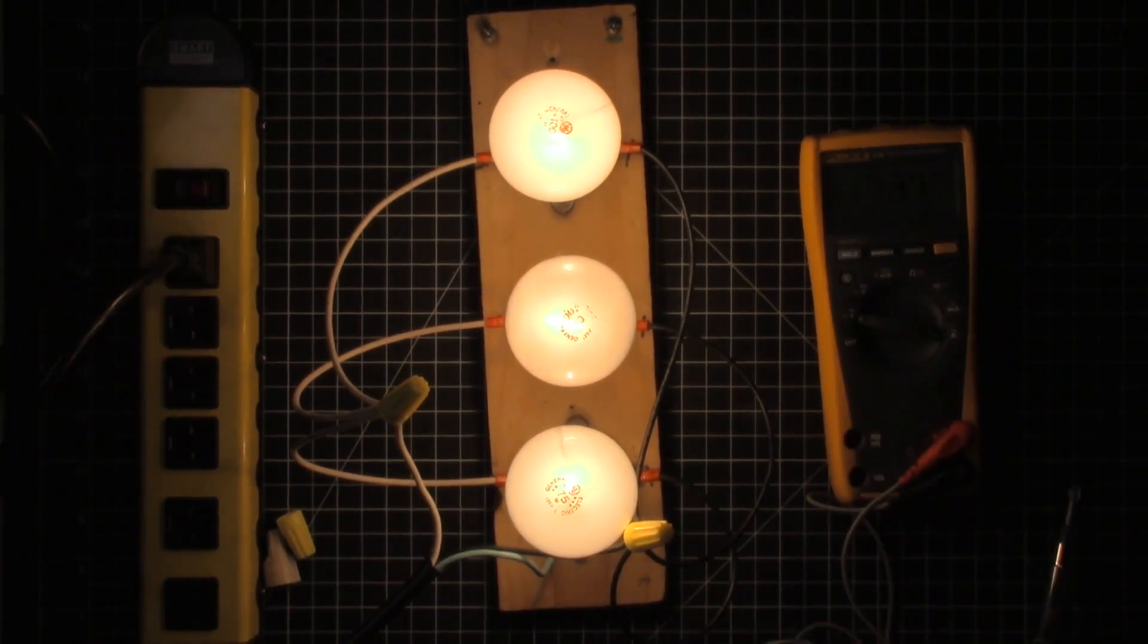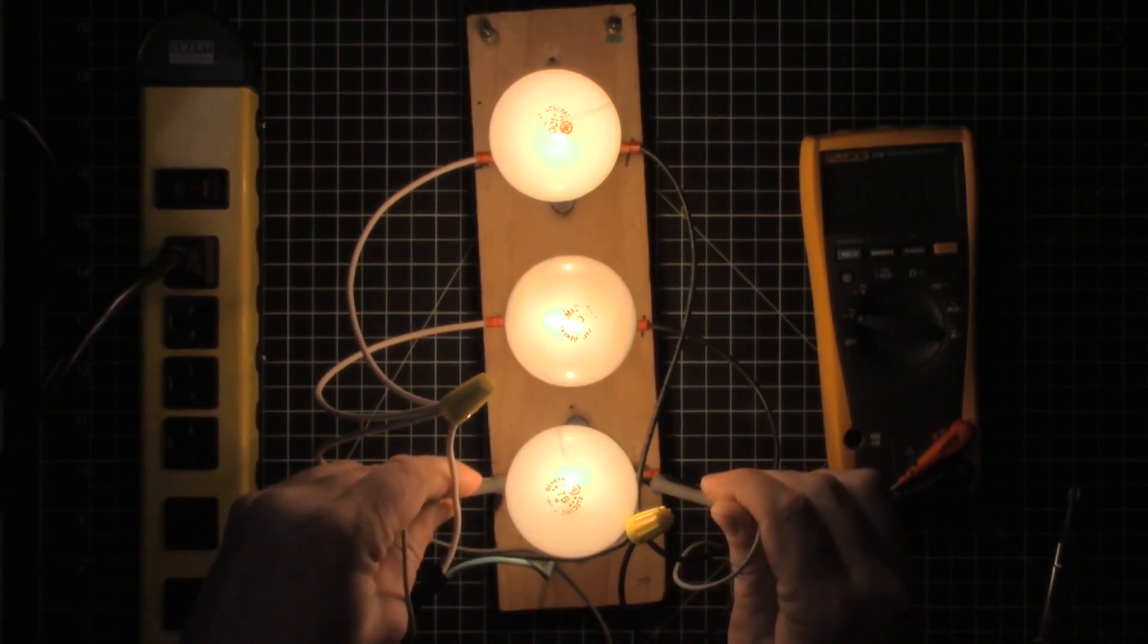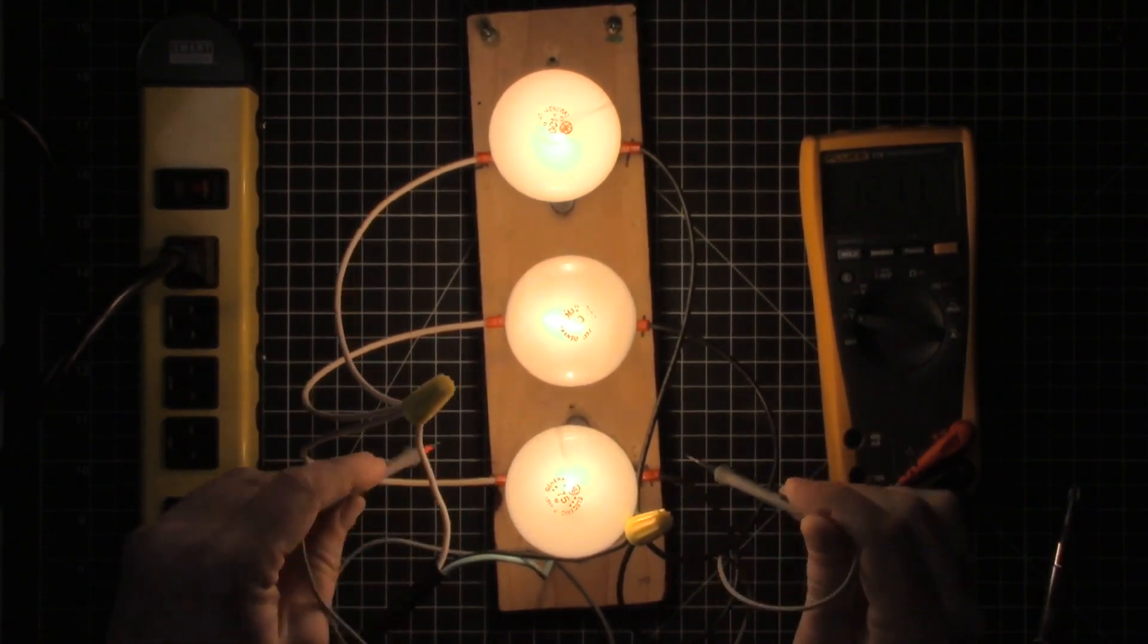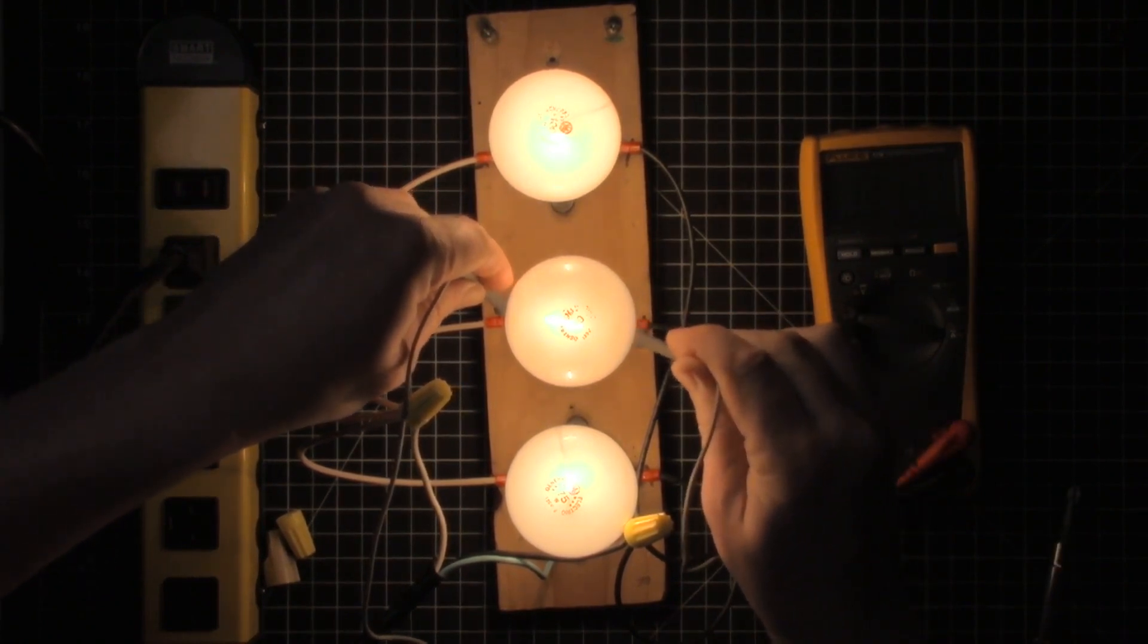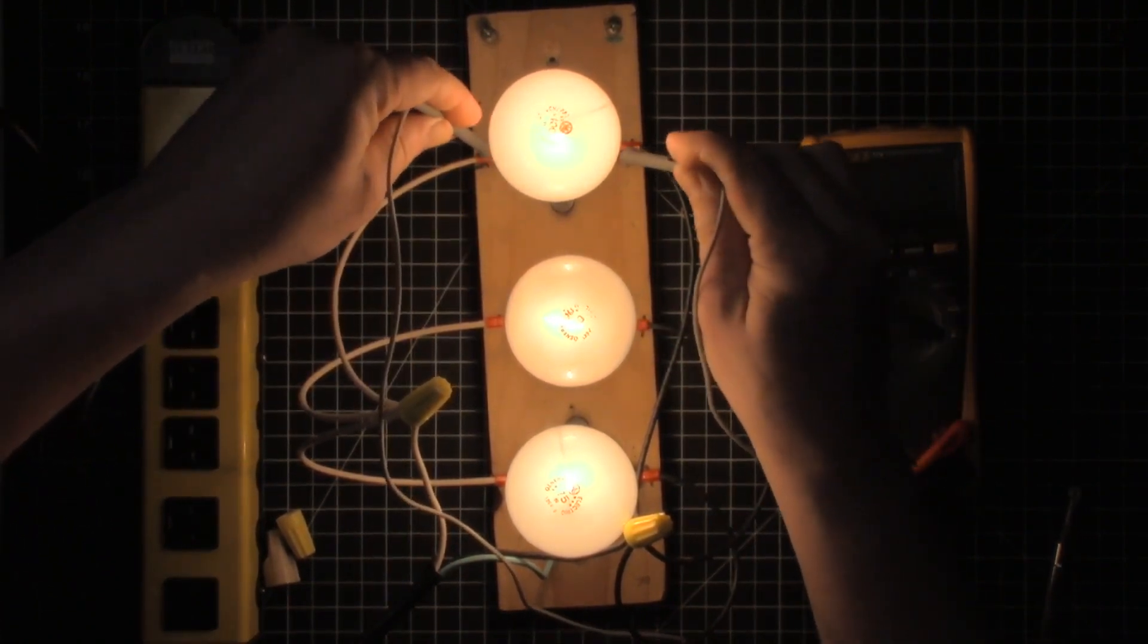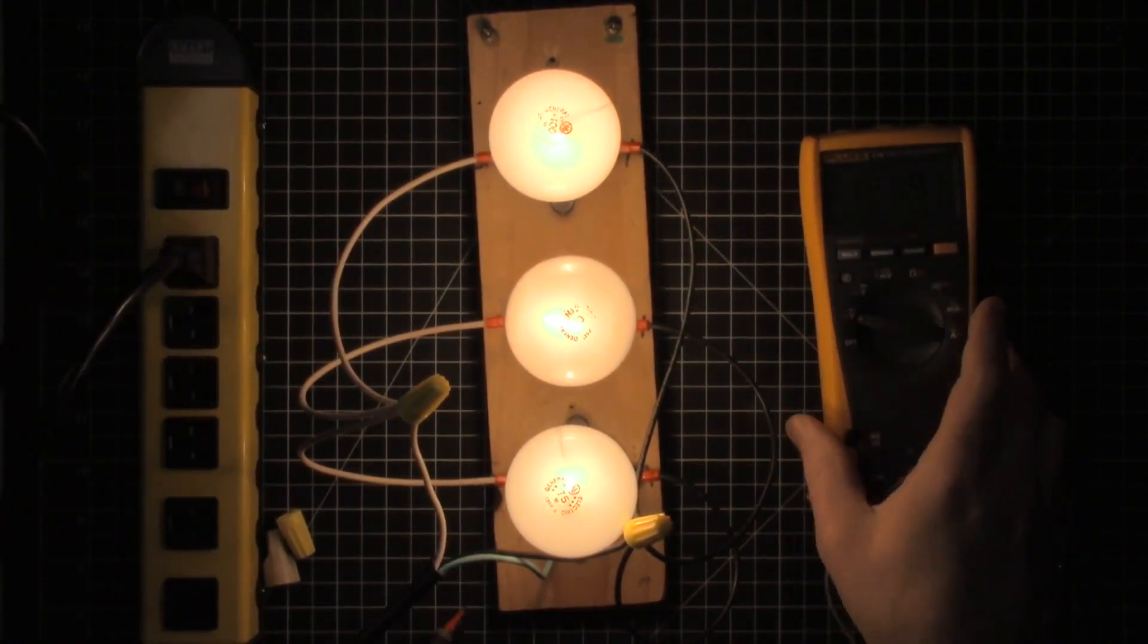But as I go across these, and because it's all in parallel, all of the voltages are 120 volts, and you'll just have to take my word for that, but that's the way it is. I'm getting 120 volts as I run my meter across each of those. That's perfect.